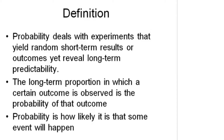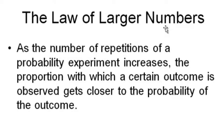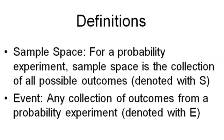Probability is how likely it is that some event will happen. The law of large numbers states that as the number of repetitions of a probability experiment increases, the proportion with which a certain outcome is observed gets closer to the probability of the outcome. The sample space for a probability experiment is the collection of all possible outcomes, denoted with S.